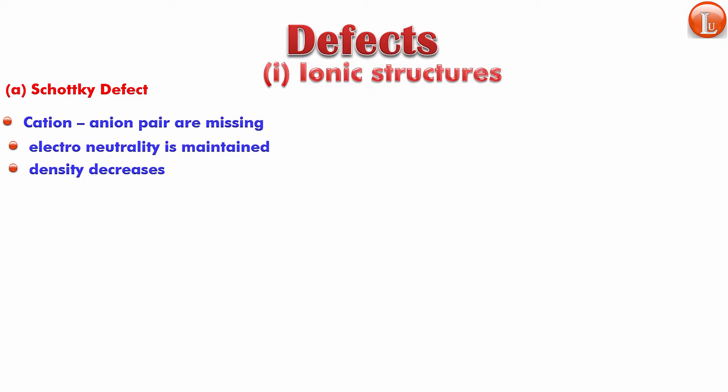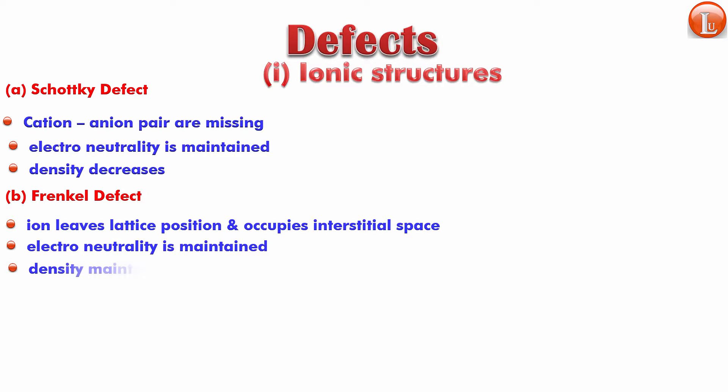The second is called the Frenkel defect. In the Frenkel defect an ion leaves its lattice position and occupies interstitial space. This is equal to self interstitial. So an ion leaves lattice position and occupies interstitial space. The amount of space it leaves and occupies will always be same. Electroneutrality is maintained and so is density.